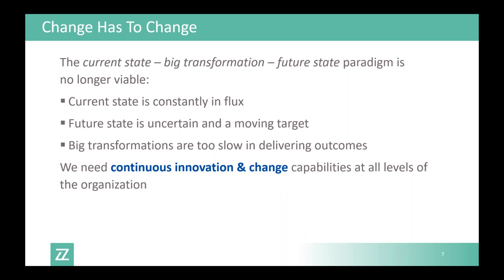One issue we see in large organizations is the habit of thinking in terms of a current state, then doing a large transformation to reach a future state planned well in advance. That doesn't really work because of the fast pace of change — your current state is constantly in flux, and the future state is a moving target. You can't say 'we want to be there in five years time.' These big transformation programs try to do too much at once, everything connected to everything else, which really slows down change.